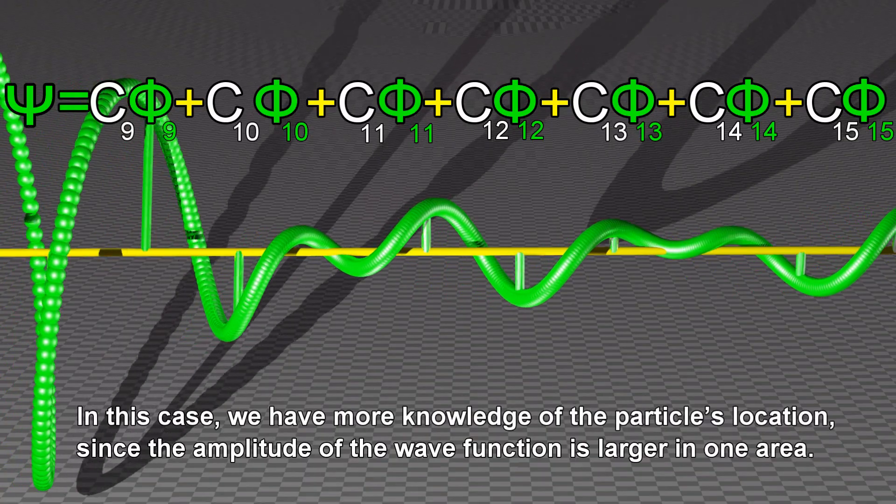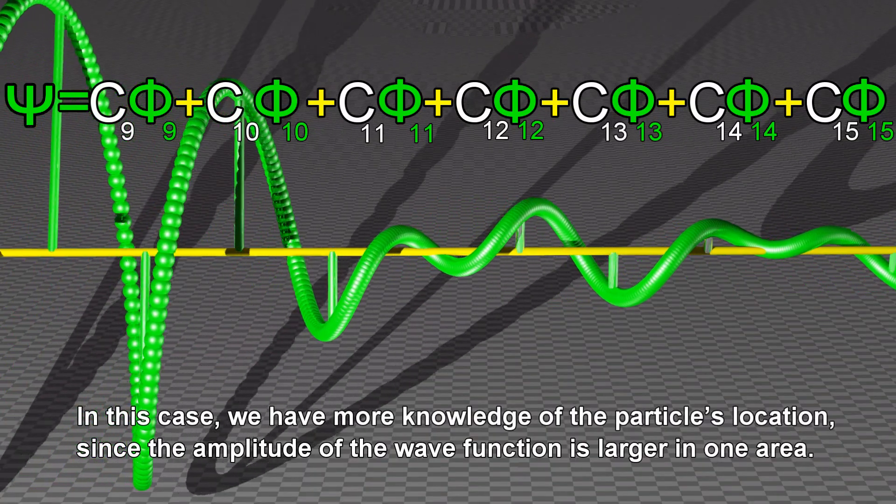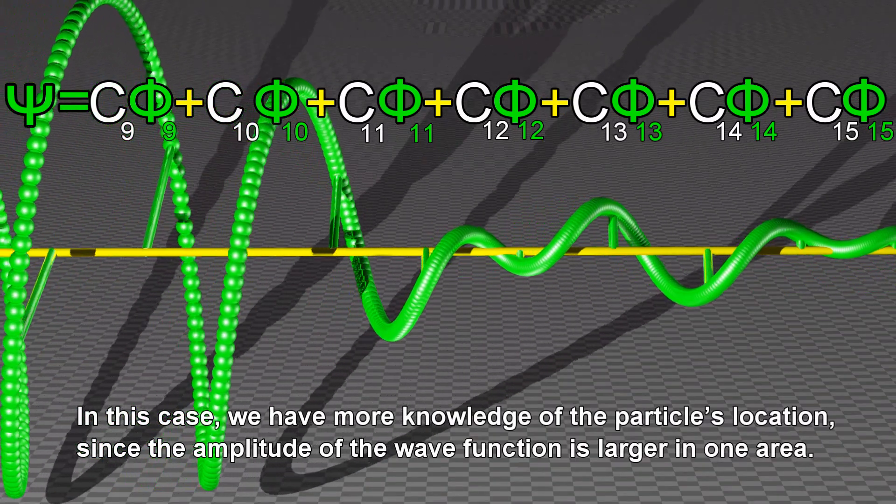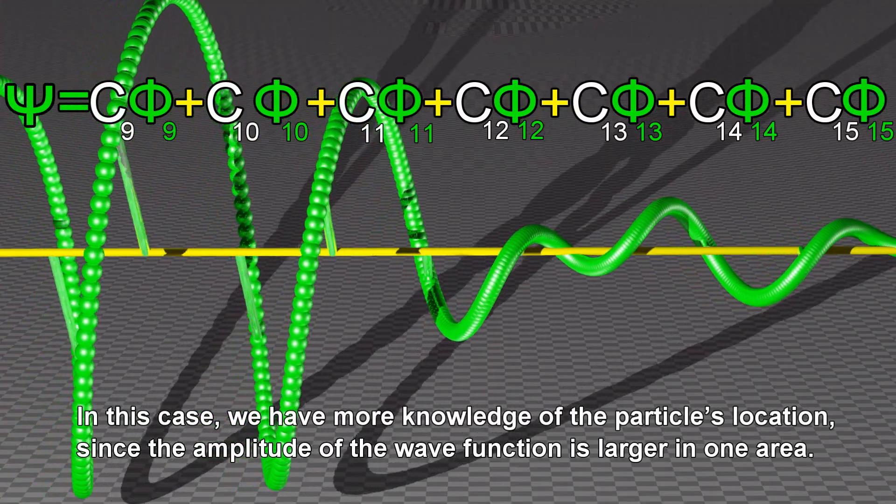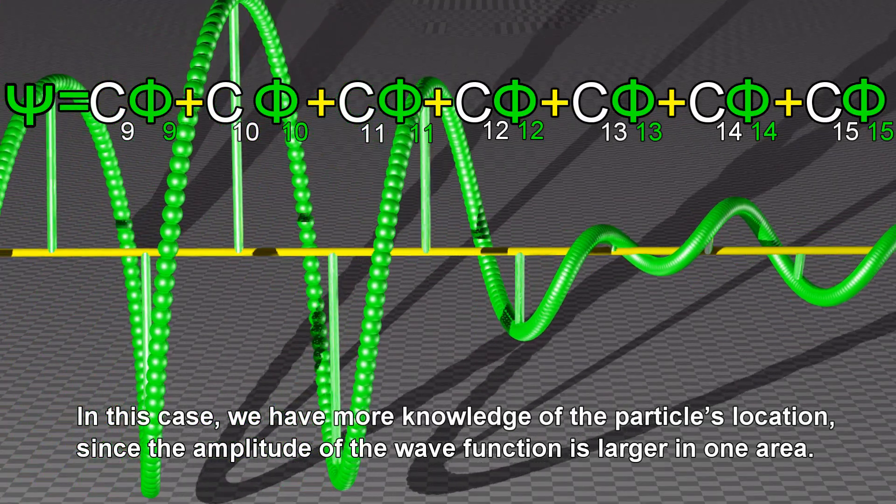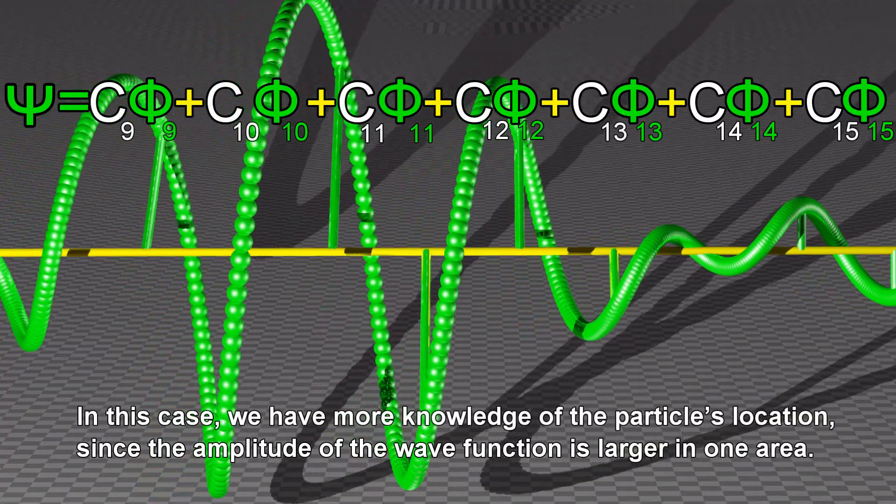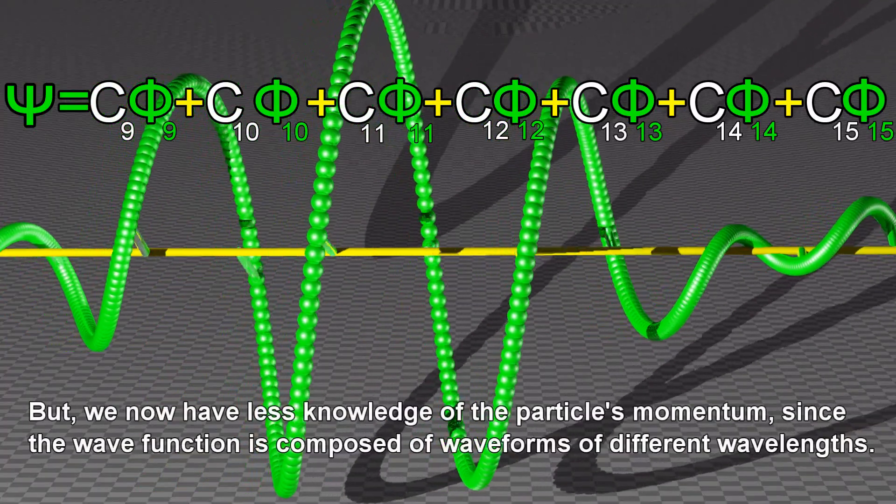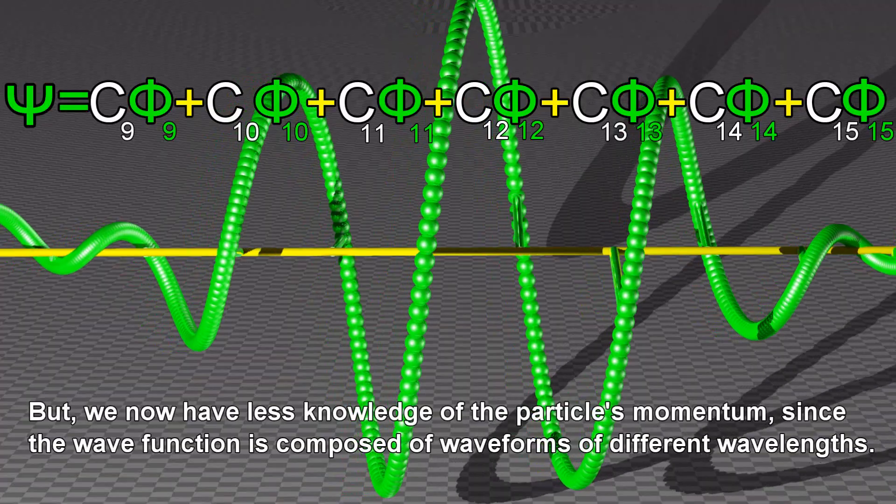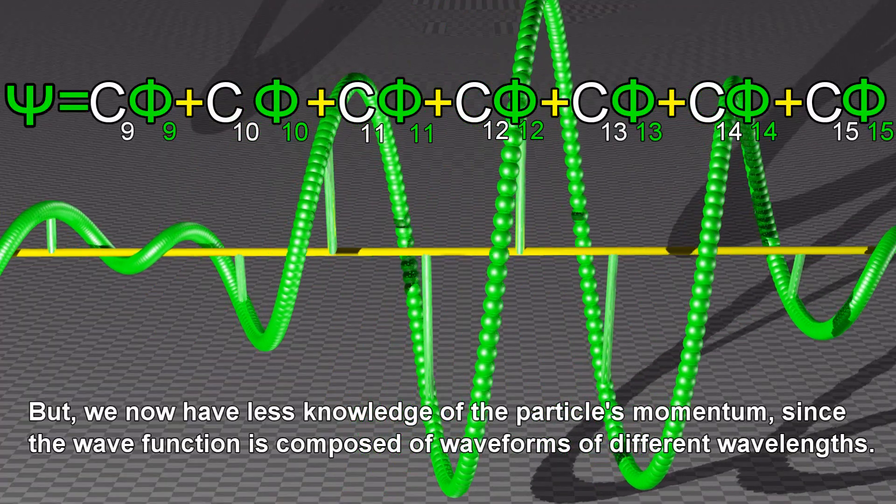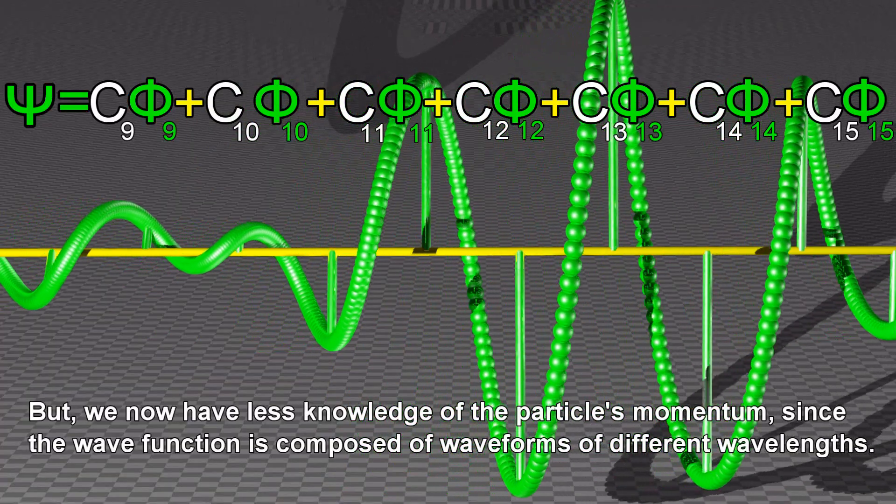In this case, we have more knowledge of the particle's location, since the amplitude of the wave function is larger in one area. But we now have less knowledge of the particle's momentum, since the wave function is composed of waveforms of different wavelengths.